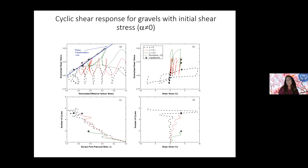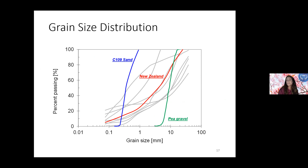We have also been looking at the effects of initial shear stress because the K-alpha relationship is a very important one. We want a material-specific relationship, as we're already seeing that sand-based K-alpha curves may not be appropriate for gravel materials. Grain size distribution is a very important topic. We've been testing different types of materials — typical uniform sand, uniform gravels, and the New Zealand well-graded material — and we are seeing the differences that the distribution of grain sizes makes. We've also been testing a range of other materials encountered in the field.